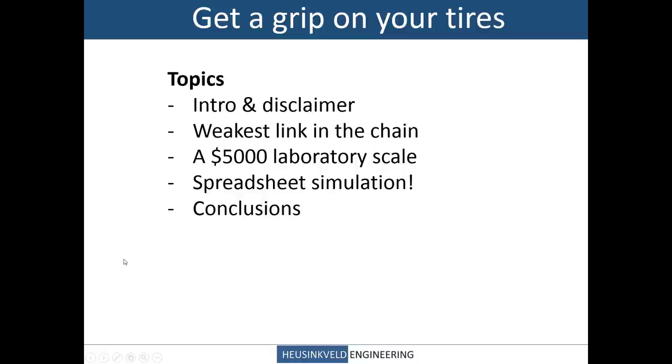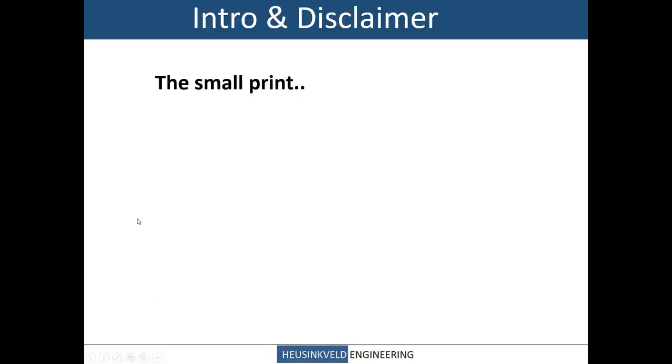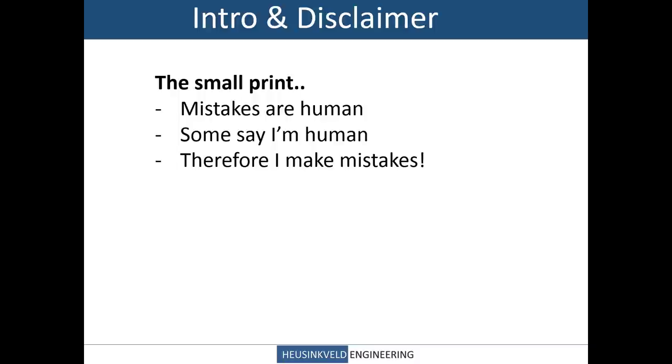The topics: a bit of an intro and disclaimer. I'll look at the weakest link in the chain, because we will see there are a lot more things involved than just the bits. The electronics, the steps that they calculate. We'll look at a 5,000 euro laboratory scale, look at the specs of a really high-end weighing scale. We'll do some spreadsheet work, because fun, and then there might be some conclusions. This picture was in the previous PowerPoint that I made. That's me, 1984, a long time ago. I have single-seater experience, right? I'm a racing driver. Well, okay, no. Small print: mistakes are human. Some say I'm human. I'm not too sure myself. But yeah, I can make mistakes, so if there are errors here in everything that I do, feel free to point them out and I'll try to correct them. Hopefully they're not too glaringly bad or obvious.